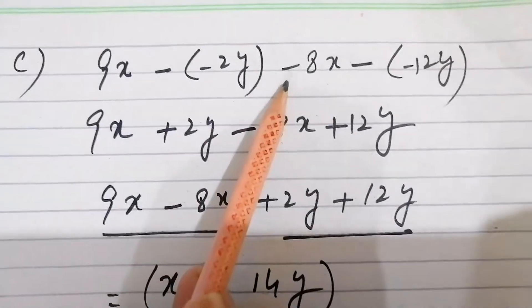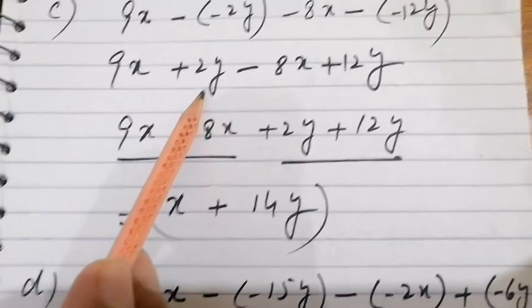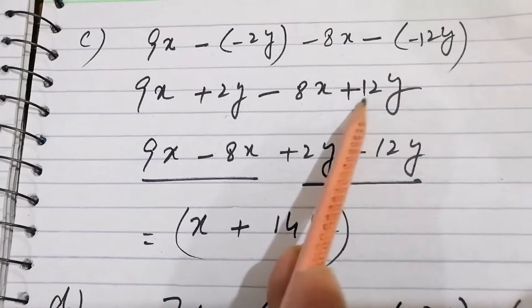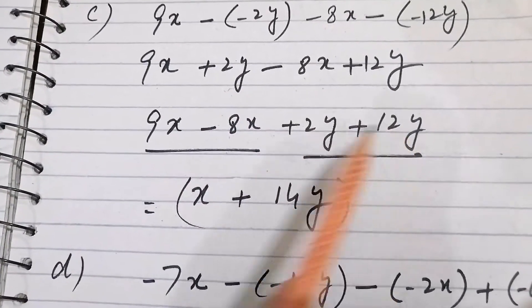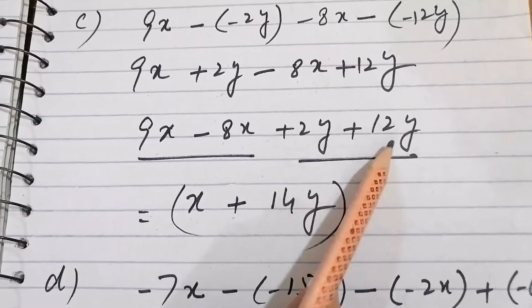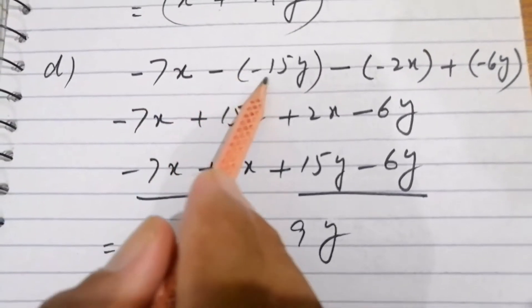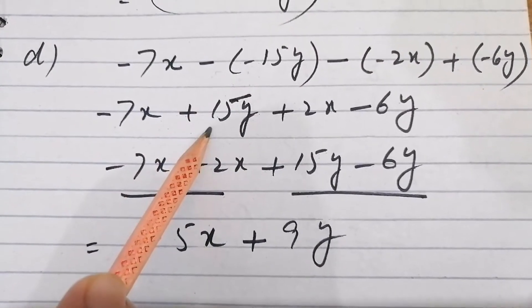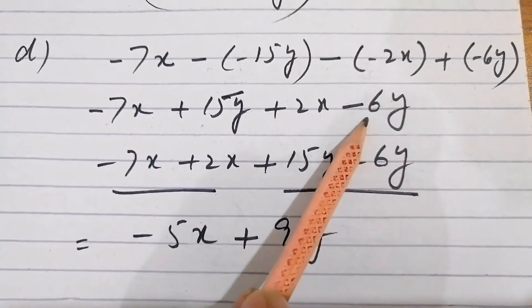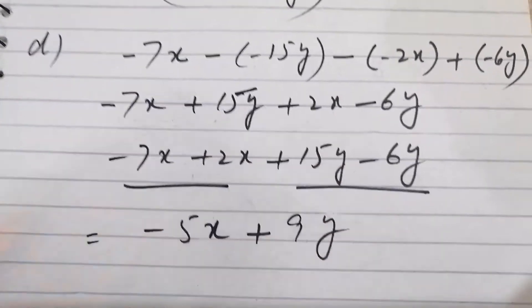Part c: 9x - (-2y - 8x) - (-12y). Resolving signs: minus minus becomes plus, giving 9x + 2y - 8x + 12y. Combining like terms: 9x - 8x = x, and 2y + 12y = 14y. Answer: x + 14y. Part d: 7x - (-15y) - (-2x) + (-6y). Simplifying: x + 2x = -x + 2x, and 15y - 6y = 9y. Answer: x - 9y... giving -x + 2x - 5y with 15y minus 6y = 9y as the answer.